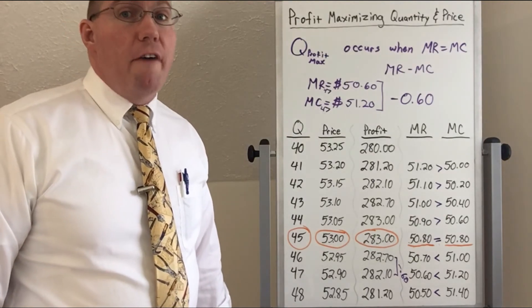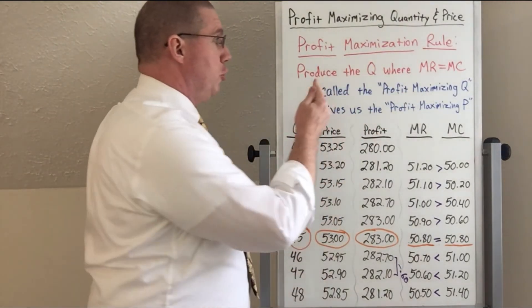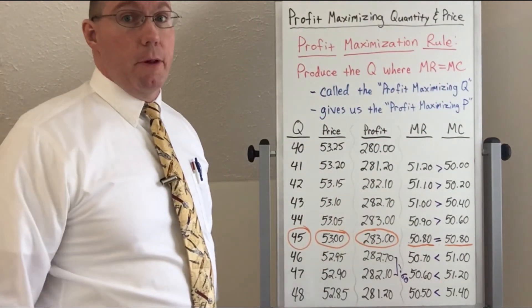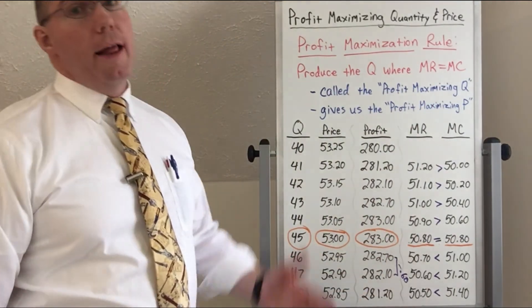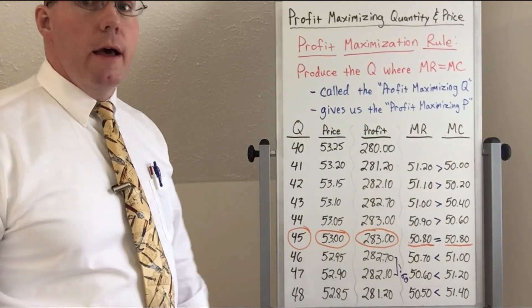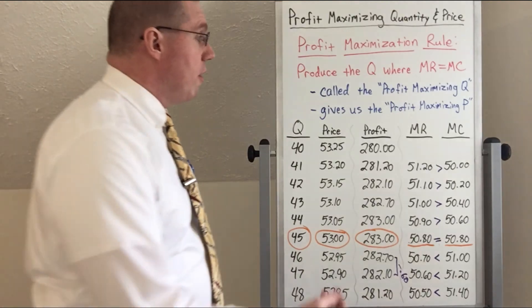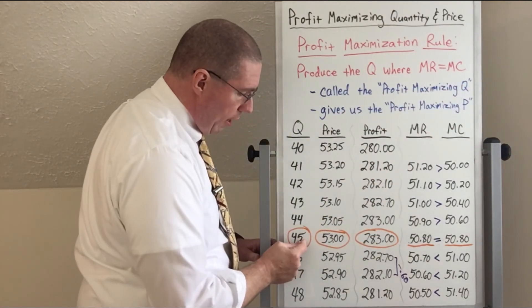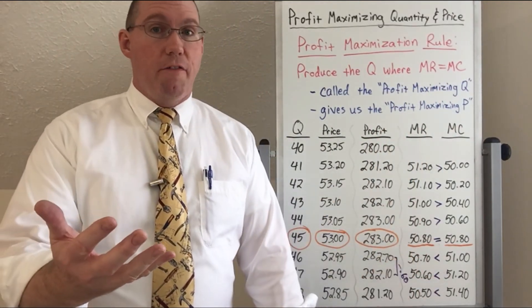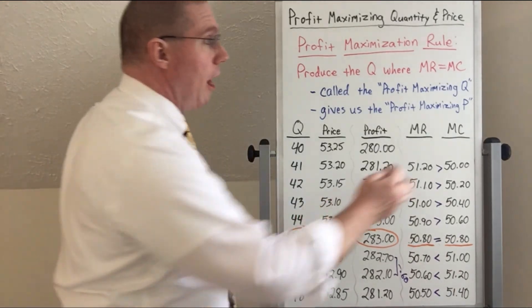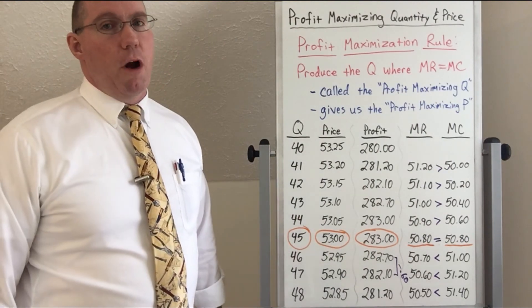So here is the profit-maximization rule for microeconomics for firms: produce the quantity where marginal revenue is equal to marginal cost. We call that the profit-maximizing quantity. Once we find the profit-maximizing quantity, that automatically determines our price — the profit-maximizing price. You can then multiply the profit-maximizing quantity times the profit-maximizing price to get the total revenue needed to maximize profit.